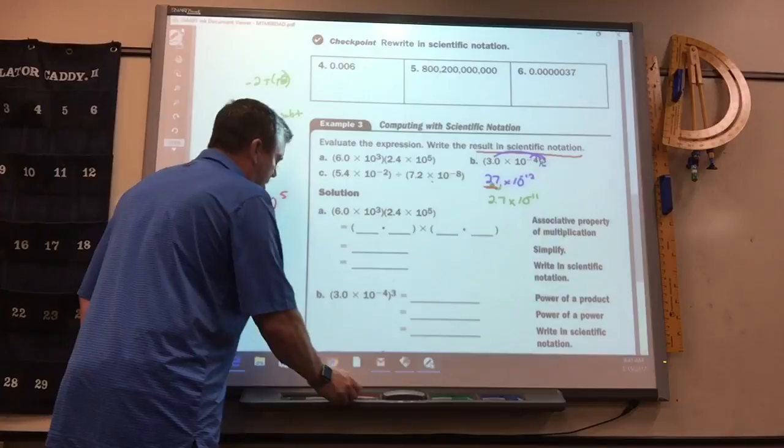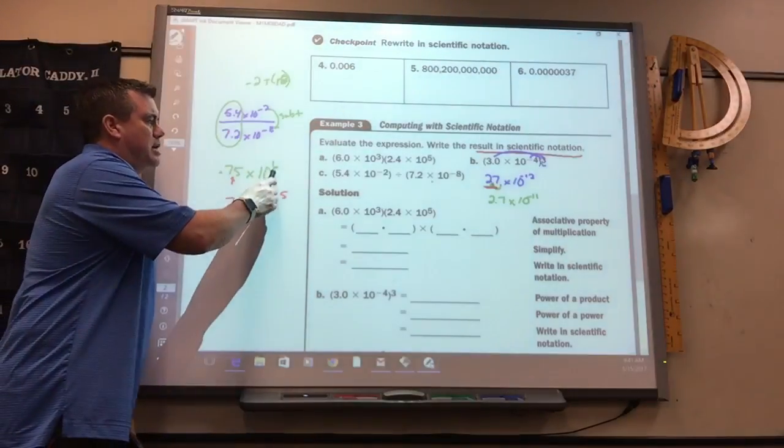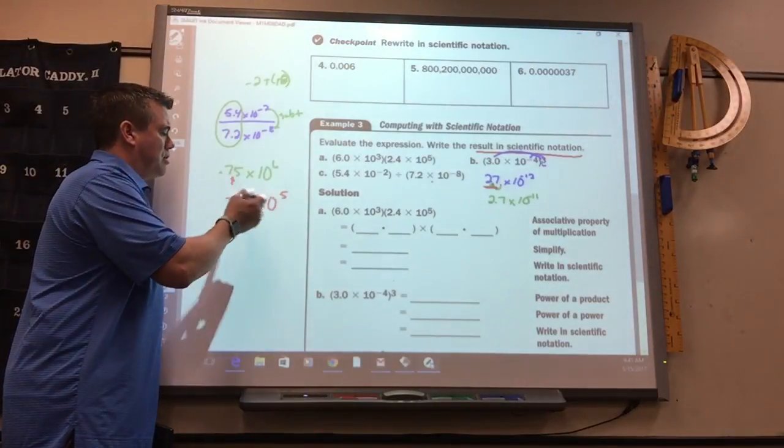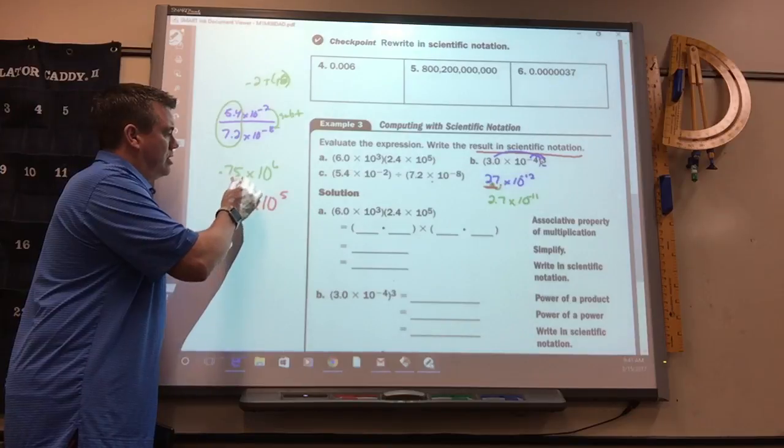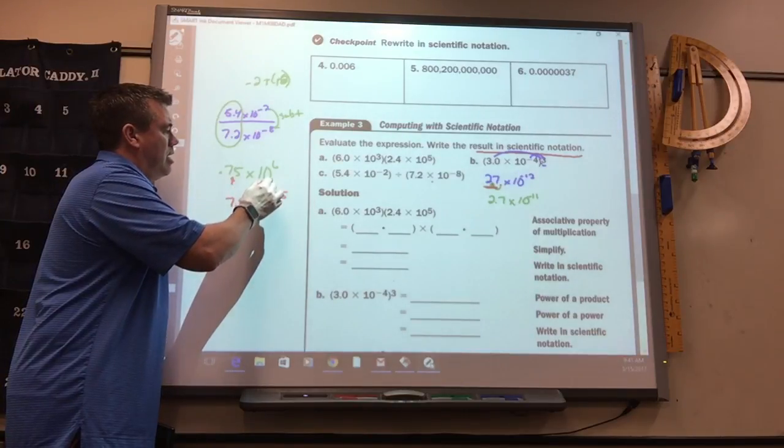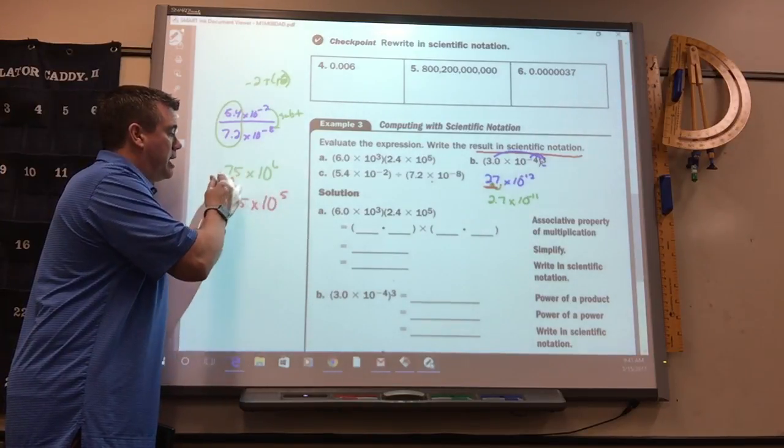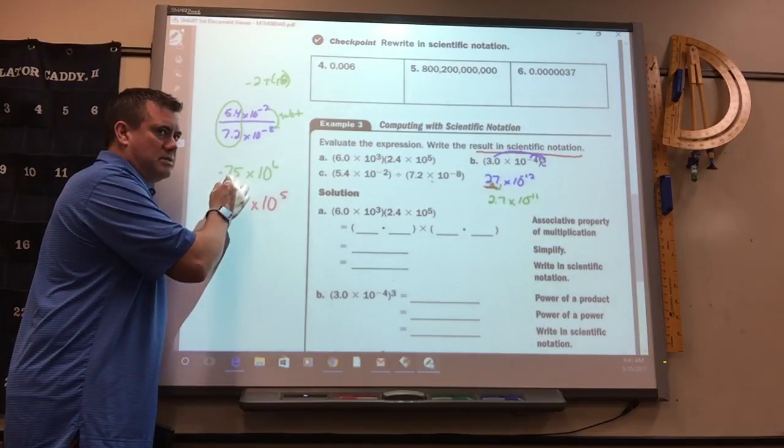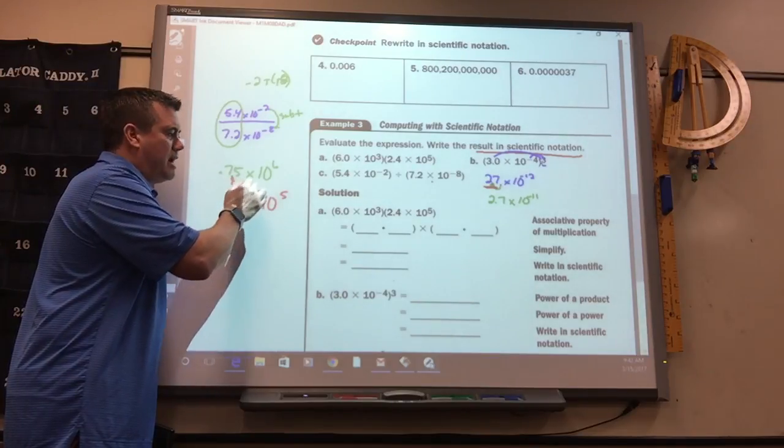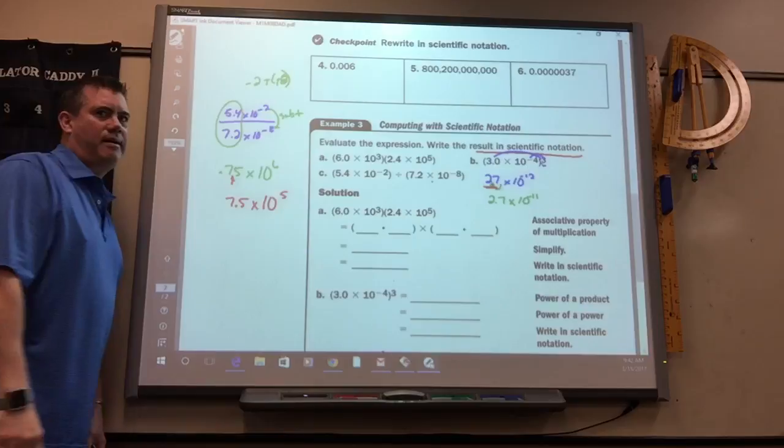And, again, if you stop to think about it, this means move the number 6 spots to the right, right? 1, 2, 3, 4, 5, 6. And then fill in 0's. But, if I move it to here, I'd only have to move it 5 spots. Okay?